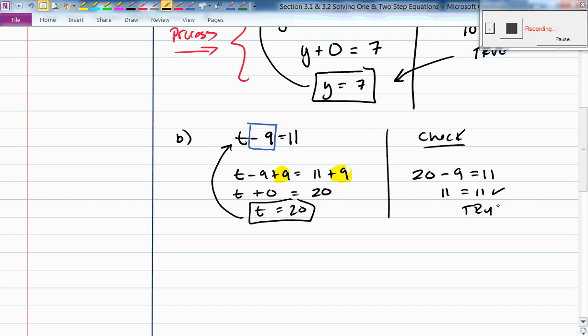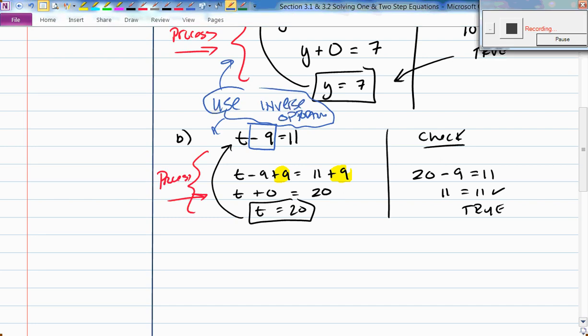Whatever I do to one side of my equation, I'm allowed to do to the other side as long as I keep it balanced. So on the left side, I get t plus 0 equals 20. Therefore, t equals 20. And let's check. Is 20 minus 9 equal to 11? Yes, 11 is 11. Check.